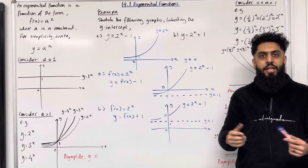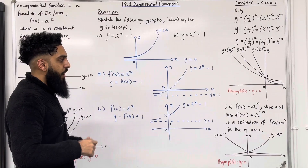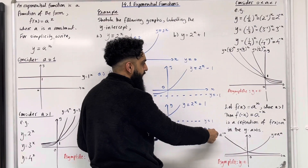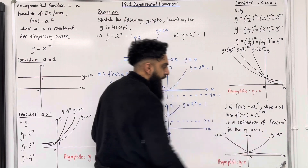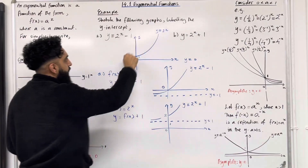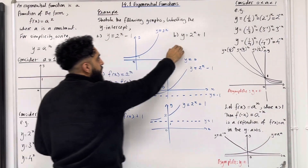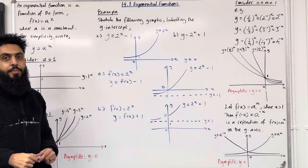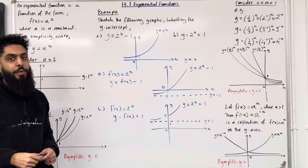In summary, you need to know the following key facts for 14.1 exponential functions. You should be comfortable sketching y = a^x and y = a^(−x) for a > 1, and with transforming these graphs. In my example, I transformed y = 2^x to get y = 2^x − 1 and y = 2^(x+1). If you found this teaching video useful, please subscribe, leave a like, leave a comment, and turn on your notification bell.